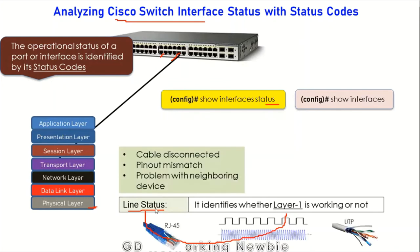A line status problem means there may be a disconnection in the cable — the cable may be broken or damaged, or there may be a pin-out mismatch. If you remember how to make a UTP cable, there are specific pin configurations, and if there is a problem, the line status code will indicate a pin mismatch, disconnected cable, or a problem with the neighboring device to which the switch is connected. These physical layer problems are indicated by the line status code.